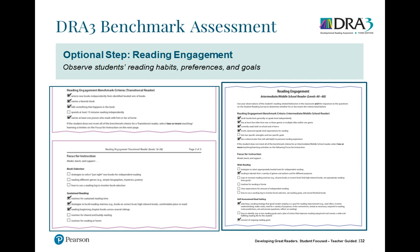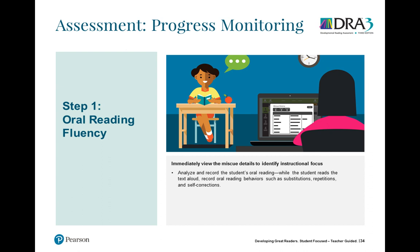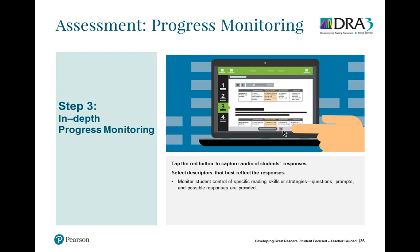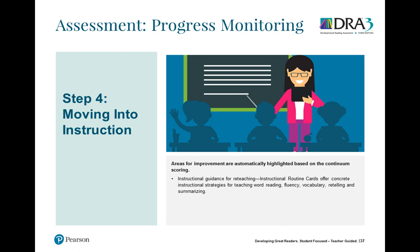Progress monitoring is now included in the kit and is housed online. You give an oral reading fluency assessment, analyze and record the student's oral reading, then record and score by monitoring their comprehension. The in-depth progress monitoring identifies specific skills or strategies the student needs to work on, and provides different examples of instructional activities for intervention — so you don't have to gather materials separately.